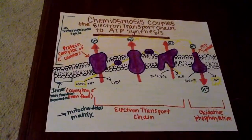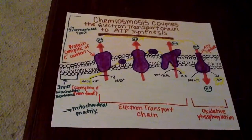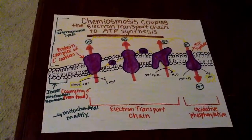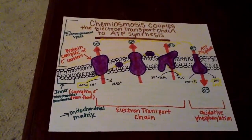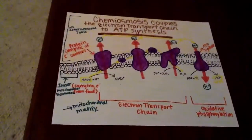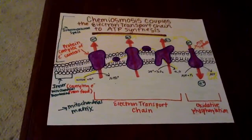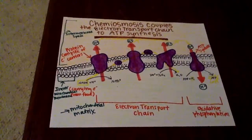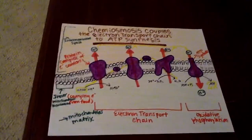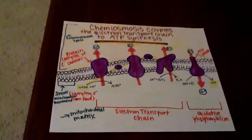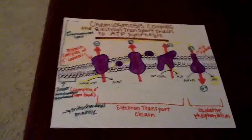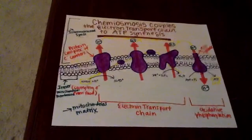Chemical energy originally harvested from food is transformed into a proton motive force — a gradient of H+ across the membrane, which you can see up here. The hydrogen ions flow back down their gradient through a channel in ATP synthase, which is another protein complex built into the membrane. ATP synthase harnesses the proton motive force to phosphorylate ADP, which forms ATP. The use of an H+ gradient — proton motive force — to transfer energy from redox reactions to cellular work, which is ATP synthesis, is called chemiosmosis.